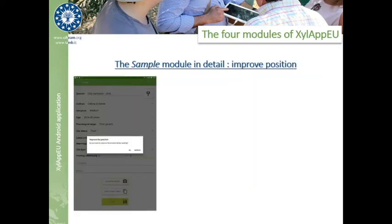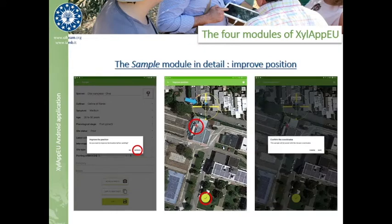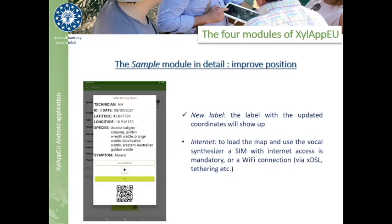If we decide to improve the position, an instance of Google Maps opens up, showing in red the position captured by the tablet. Moving the map and tapping on the site when our tree is under the center of the map will allow us to virtually reduce to zero the positioning error, doing a better job than the most expensive GPS receivers on the market. When the new position, shown in blue, is confirmed with the confirmation button below, the label is again generated accordingly. It's important to remark that the map can only be loaded if an internet connection is present; the same is valid for the vocal synthesizer.